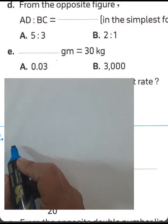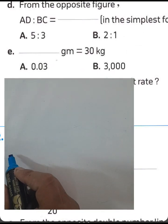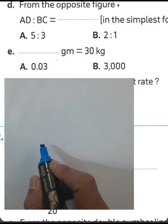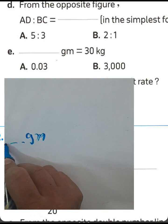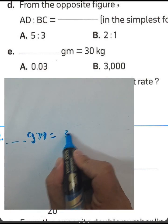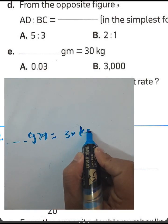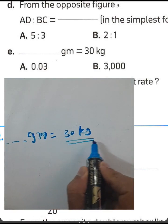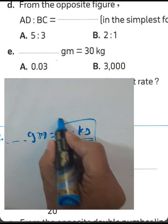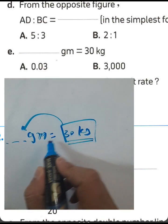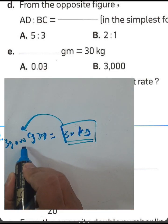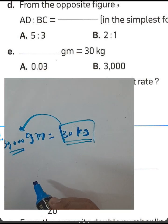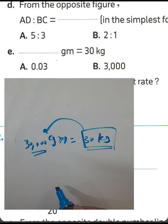Letter E: convert space grams to kilograms. To find how many grams equal 30 kilograms, multiply by 1000. The result is 30,000 grams.